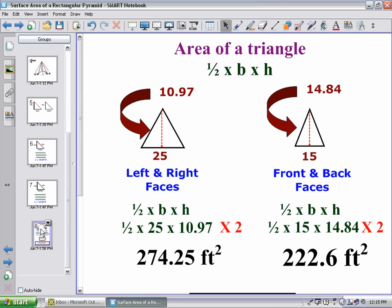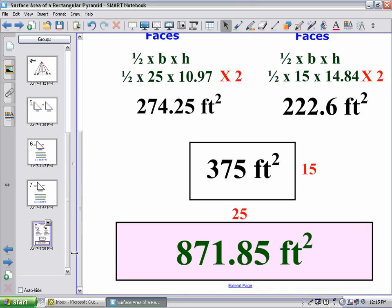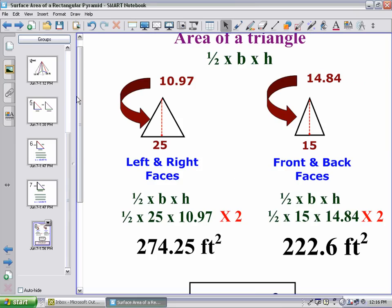I need to take these two numbers, add them together, last but not least with my rectangular base, which is 15 times 25, which gives me 375 feet squared. And when I combine these three values, 274.25 plus 222.6 plus 375, I get a grand total, a sum of 871.85 feet squared. And this is how you calculate the area of a rectangular pyramid. I hope you find this lesson both helpful and informative.